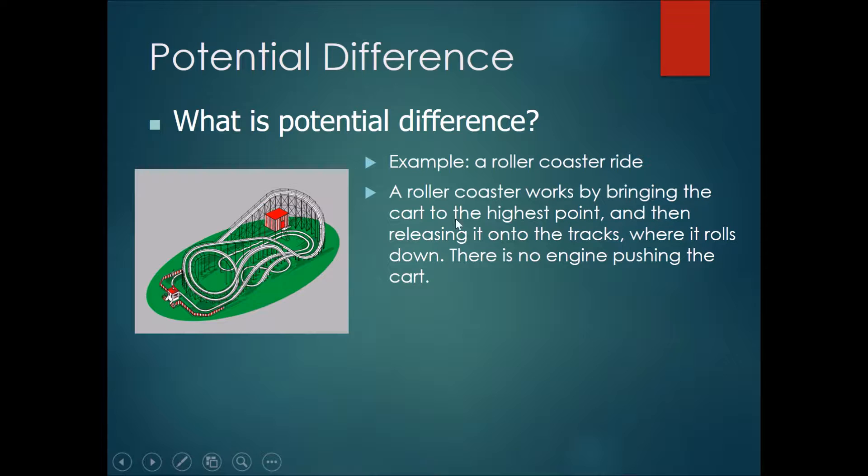A roller coaster works by bringing the cart to the highest point. A machine actually brings a cart to the highest point like this, and once it reaches the highest point, the machine releases the cart where it will roll down freely. A little bit like releasing a shopping cart down a slope. There is no engine pushing the cart down the slope until it reaches the bottom.